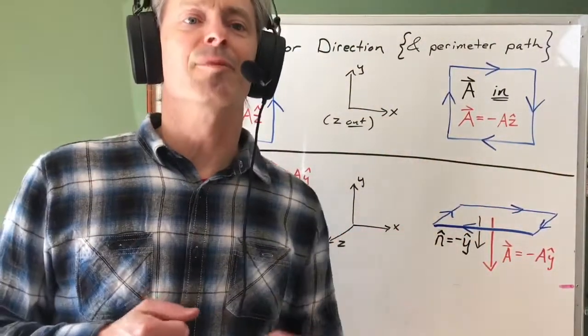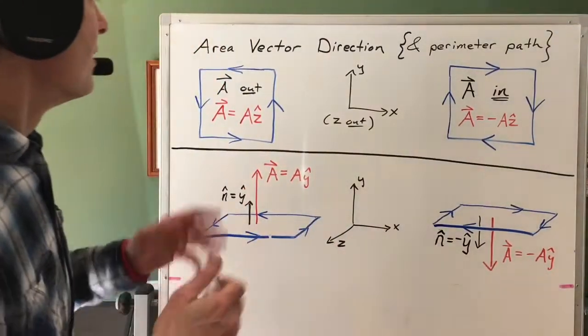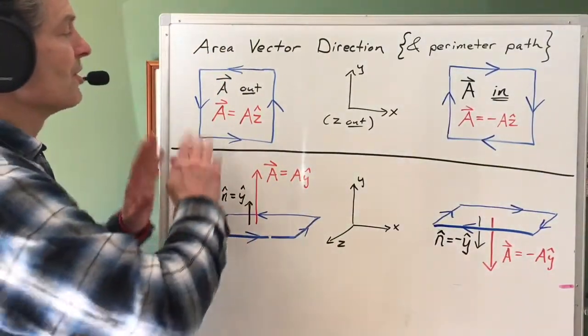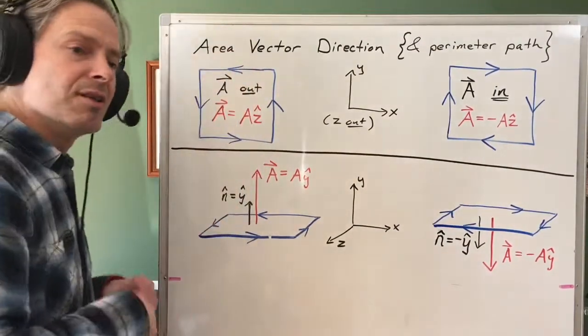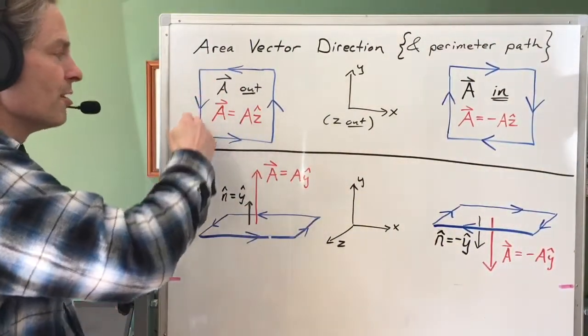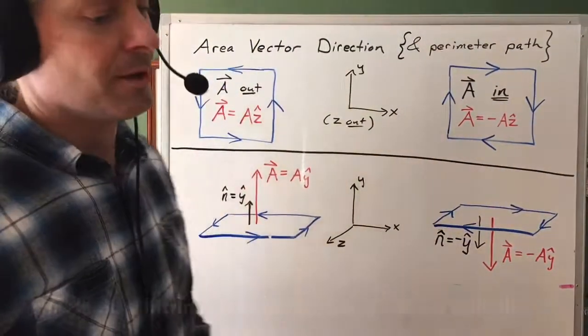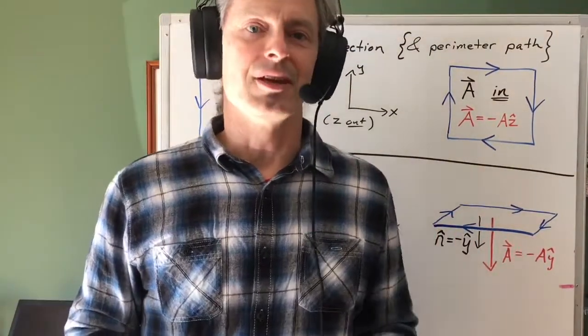especially if you're talking about physical laws that are expressed in terms of mathematics. There may be some physical parameters in your problem that correspond to the area vector direction. There may be other physical parameters that correspond to the pathway around the perimeter. One of the most important applications of that is in Faraday's law, and we'll get to that in another video. Thank you.